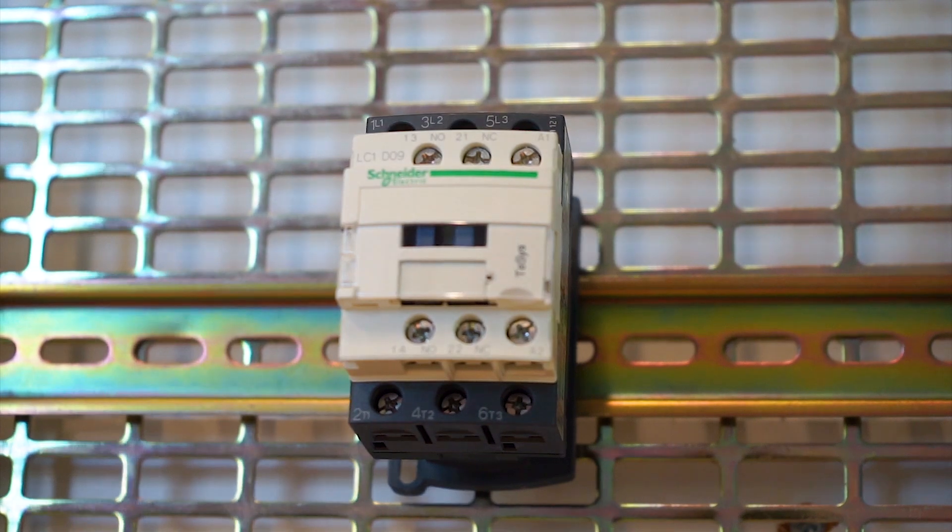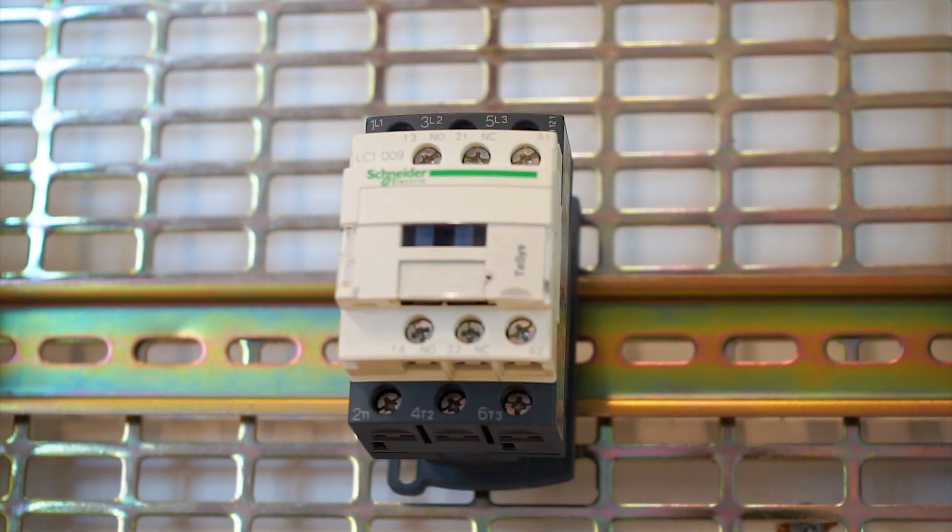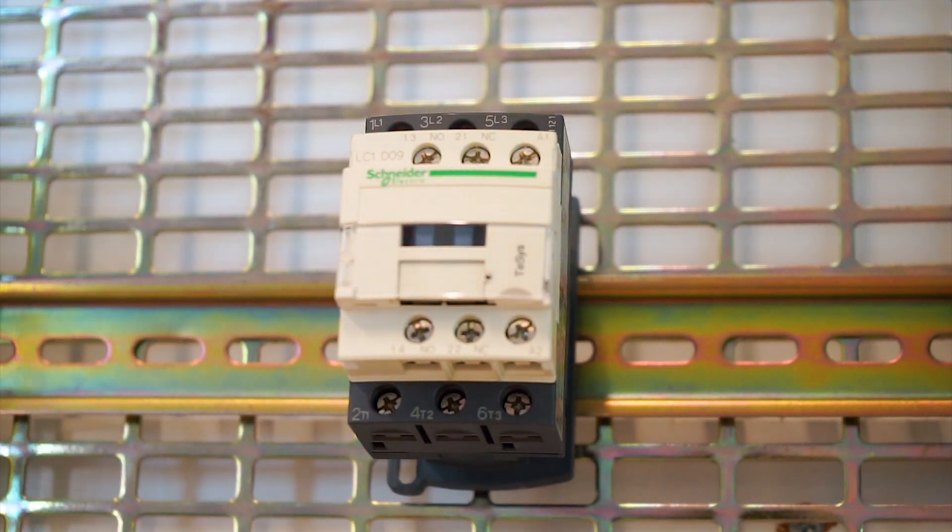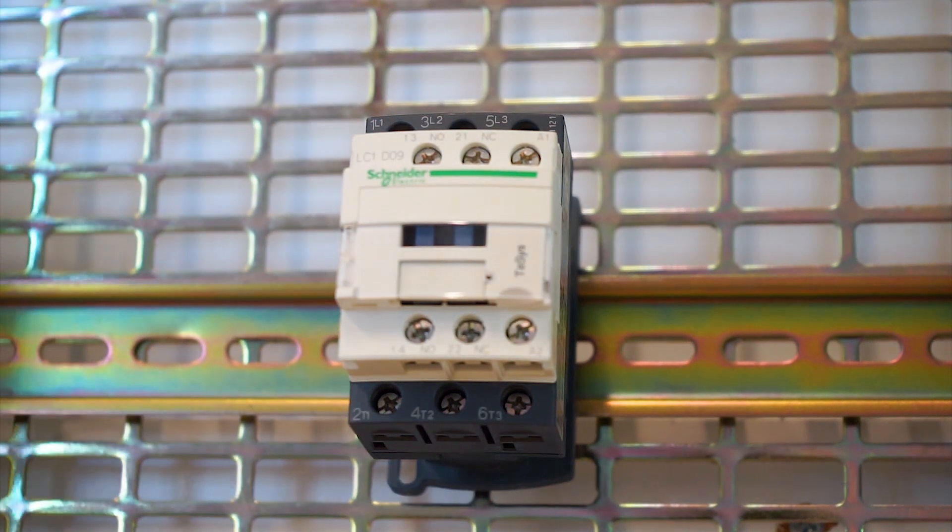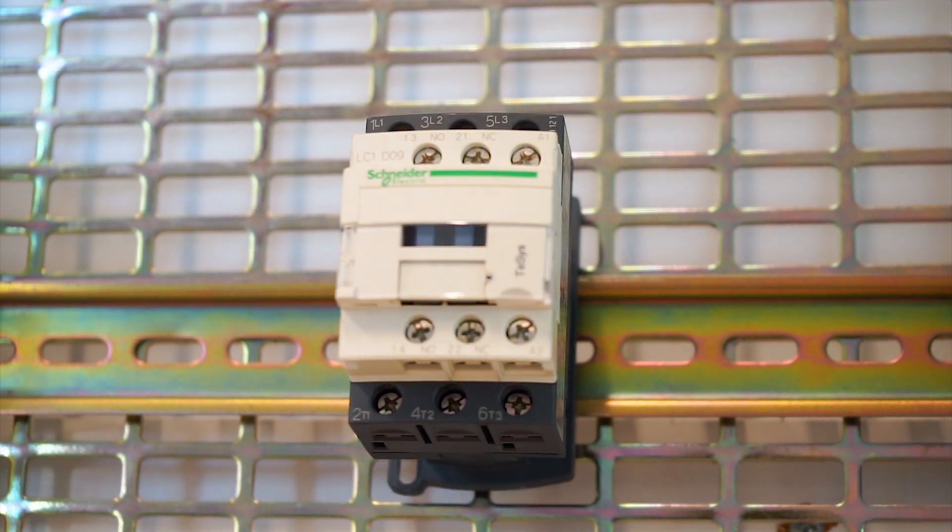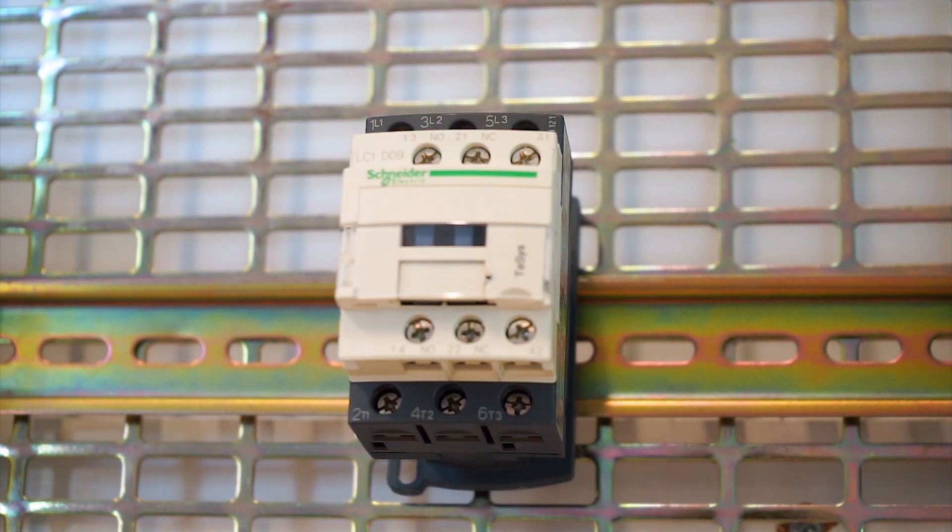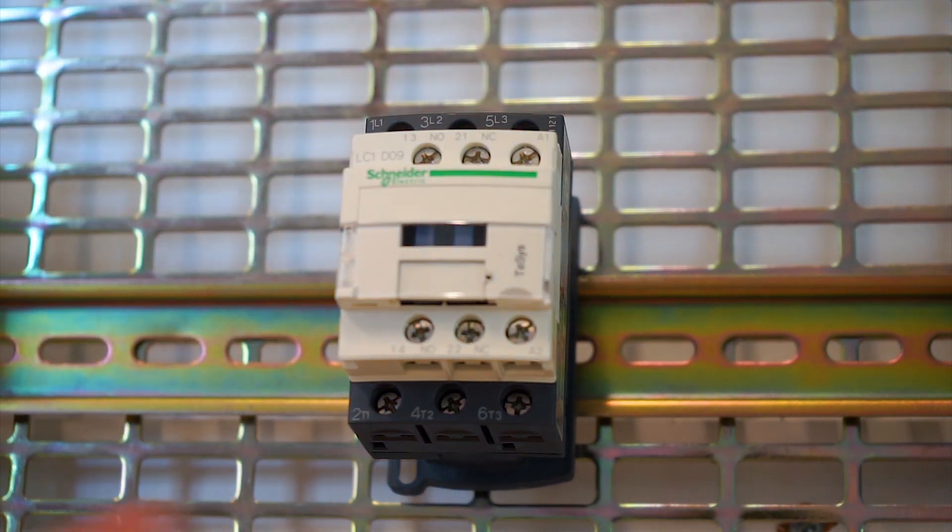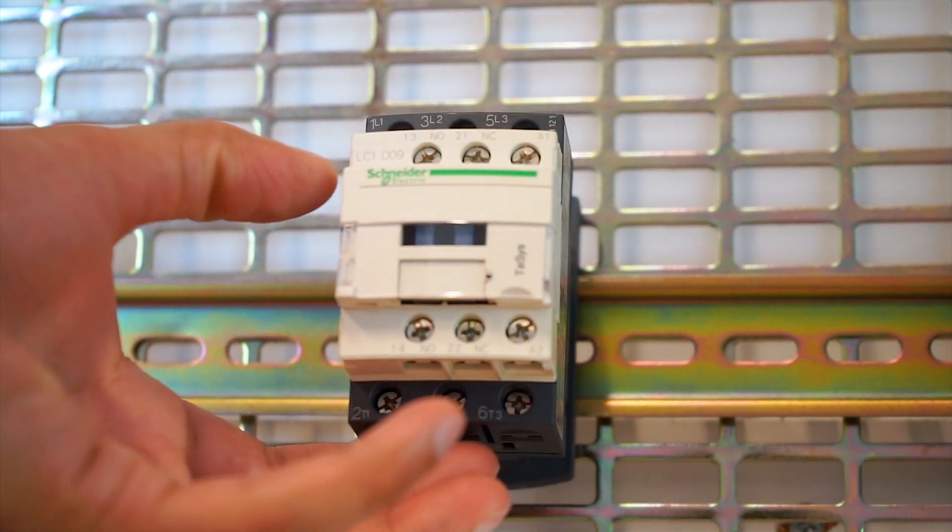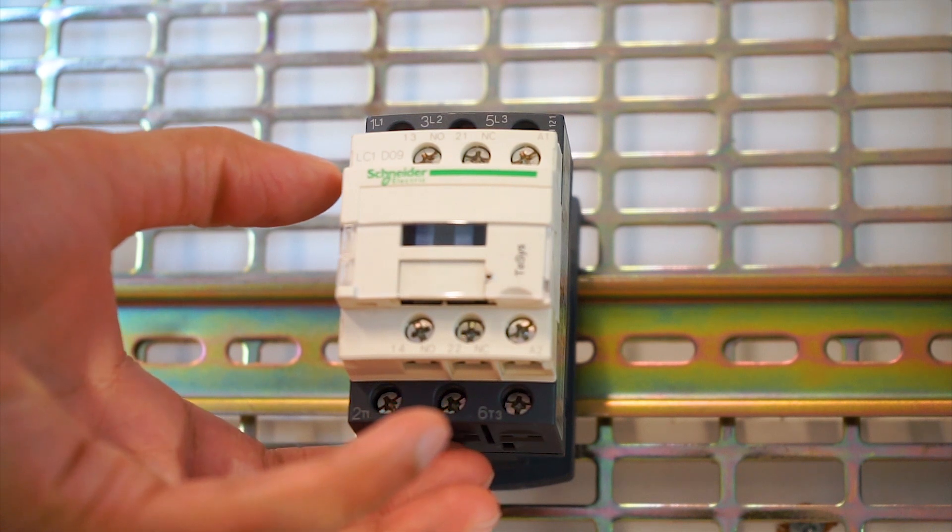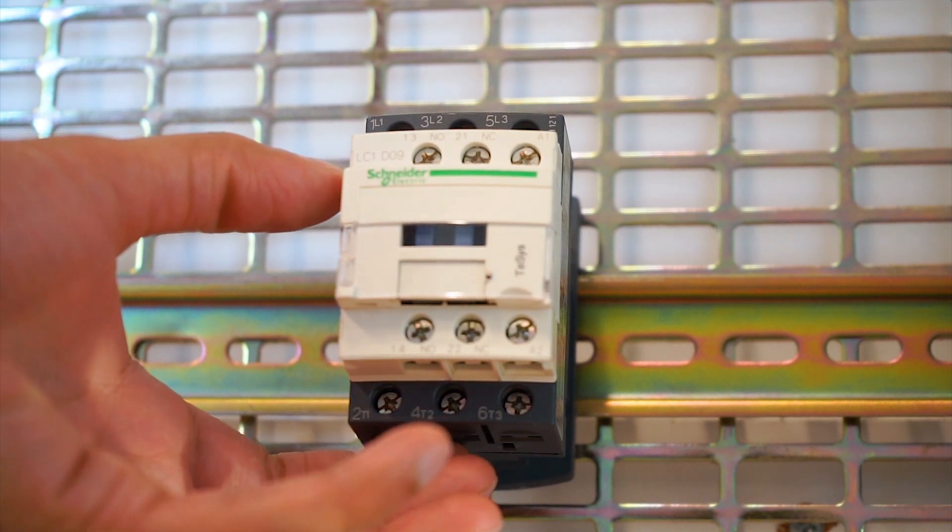Hello everyone, today we are going to talk about the TeSys D contactor and where to find the coil voltage for a 3-pole AC contactor. Here we have got an LC1D09 contactor, that's a 9 amp contactor.